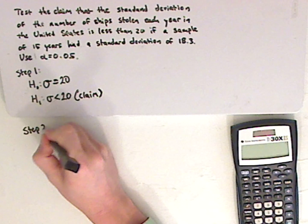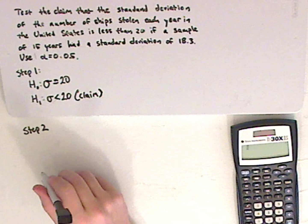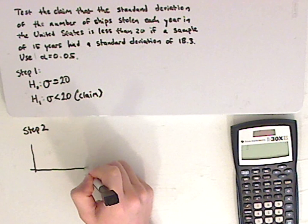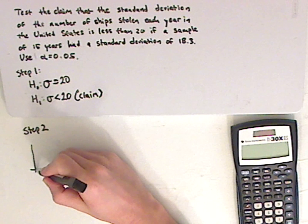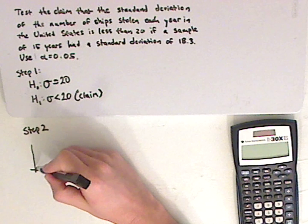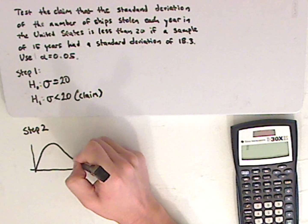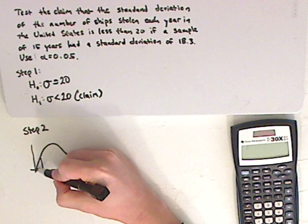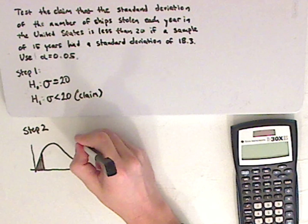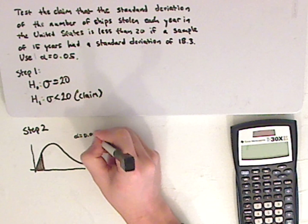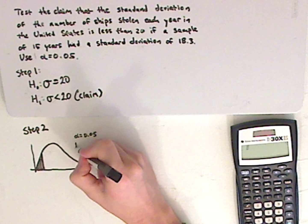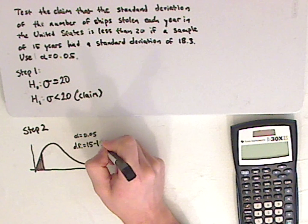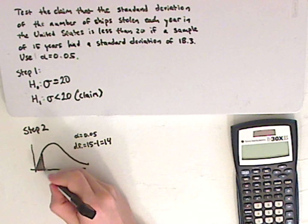Step number two is you want to find your critical values and also your critical region. Now, since this is a standard deviation and variance of one sample, you're going to use a chi-squared test. So that means you're going to use the chi-square distribution, which looks something like this. Now, since this is less than, it's going to be left-tailed. Now, your alpha here is 0.05, and you need degrees of freedom for chi-squared. So that would be n minus 1. Here, that would be 15, that's your sample size, minus 1, which is 14. You break out your chart.